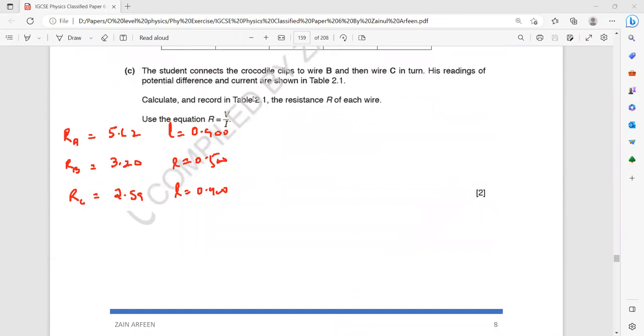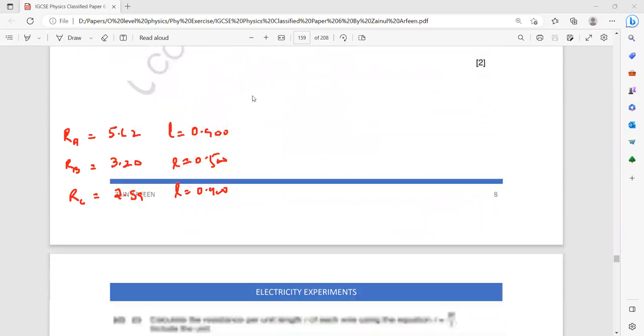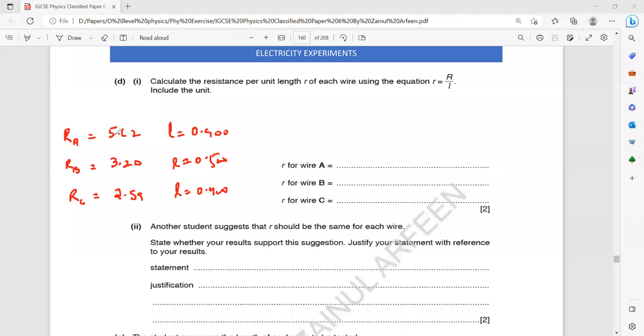Yeah, 5.00. So we want resistance per length, means resistance divided by length. So what is the resistance divided by length for A? Means 5.62 divided by 0.9. What's the answer for resistance per length? 5.62 divided by 0.9. You can use screen annotation to complete. So 6.24.